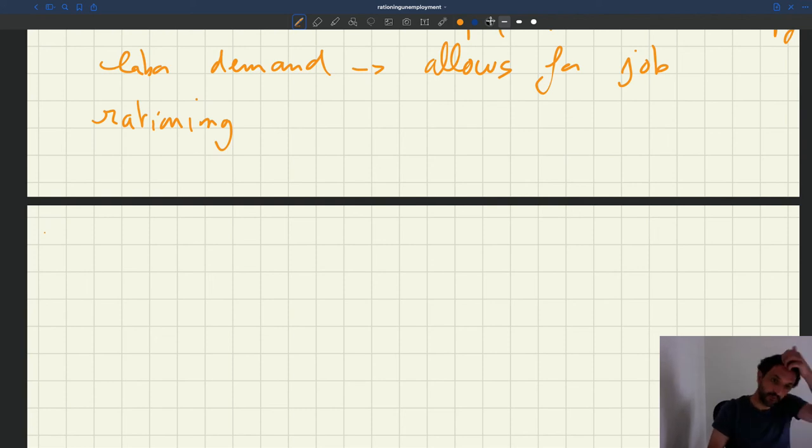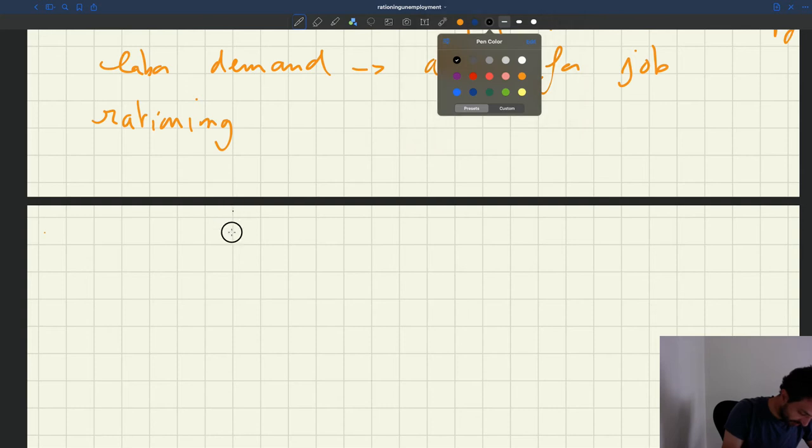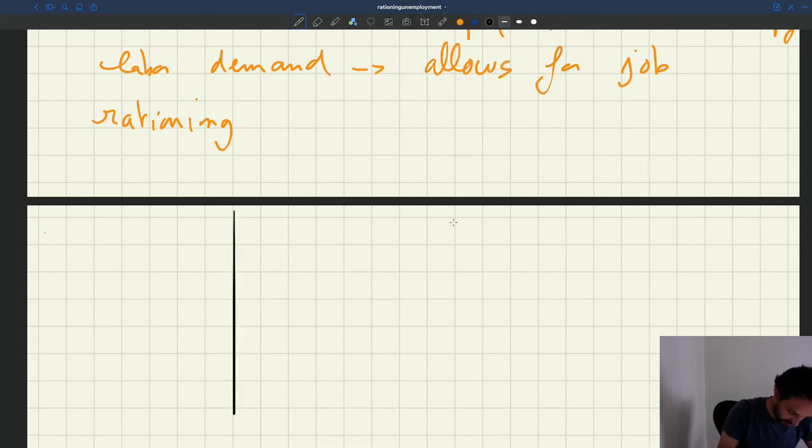The third version of the matching model is going to be the job rationing model.